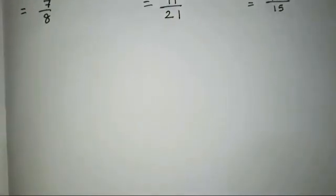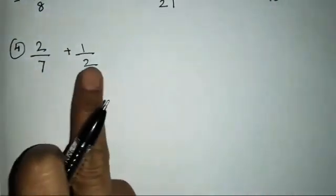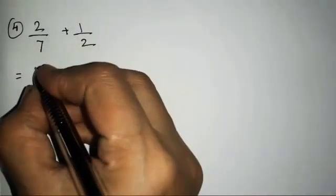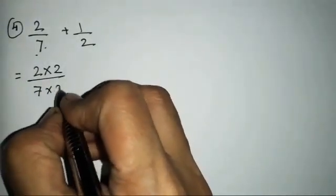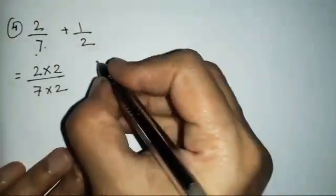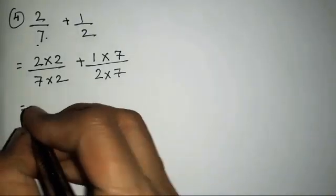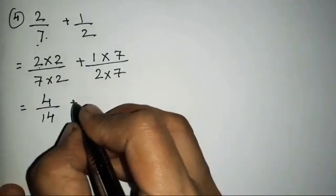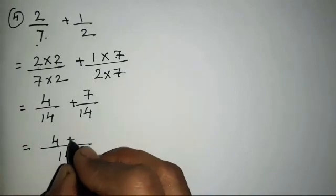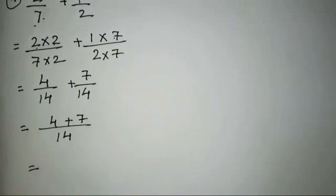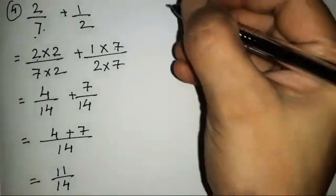The fourth sum is 2/7 plus 1/2. The denominators are different, so we multiply them with each other: 2×2 = 4 over 7×2 = 14, plus 1×7 = 7 over 2×7 = 14. Now both denominators are equal: 4 plus 7 gives us 11/14.